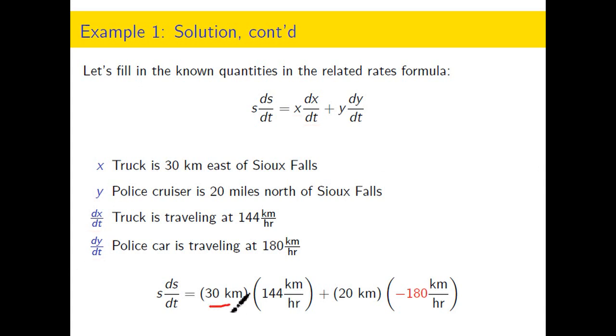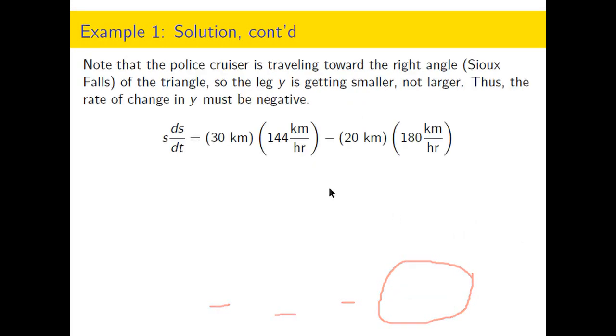This is the most important thing right here. Why is this rate negative? So the police cruiser is traveling toward the right angle. It's traveling toward Sioux Falls. So that leg of the triangle is getting smaller, not larger. So when the distance, the magnitude of that distance is changing, but it's changing in the negative direction because it's getting smaller.